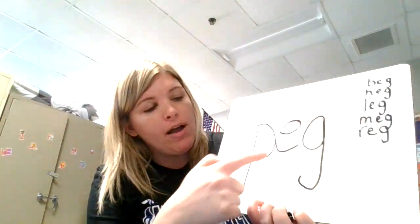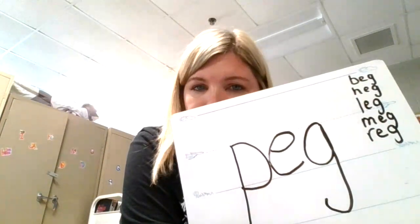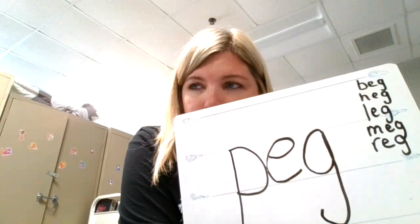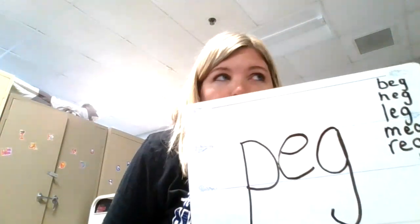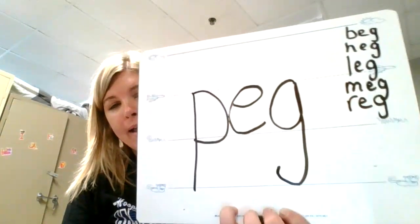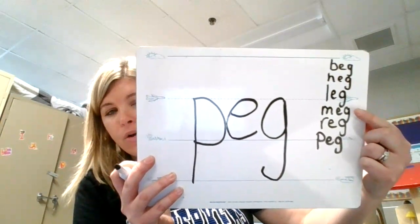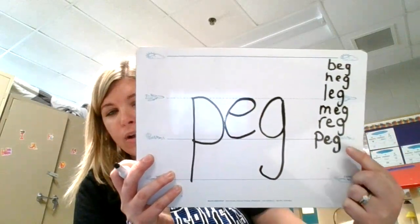We're going to do one more. We're going to put in the sound P. P, pan, P. Make sure because we're doing lowercase it should touch the worm line. P-egg, p-egg. Peg. Can you use the word peg in a sentence? I moved my peg around the game board. A peg could be your little piece that you use to play a game like Candyland. Peg could also be someone's name — someone named Peggy might go by Peg. So that is a real word. So if we can read beg, we can read heg; if we can read leg, we can read meg; if we can read reg, we can read peg.